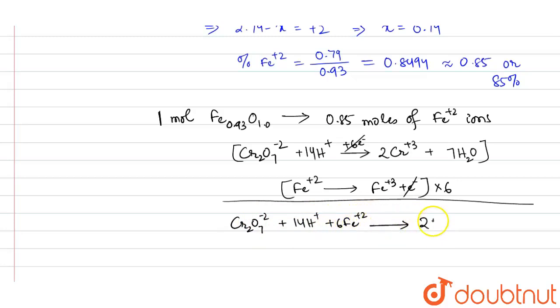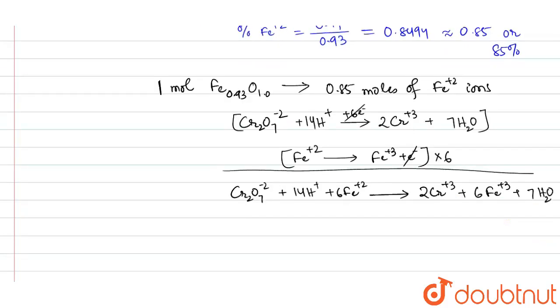So as we can see, one mole of Cr₂O₇²⁻ ions oxidizes 6 moles of Fe²⁺ ions.